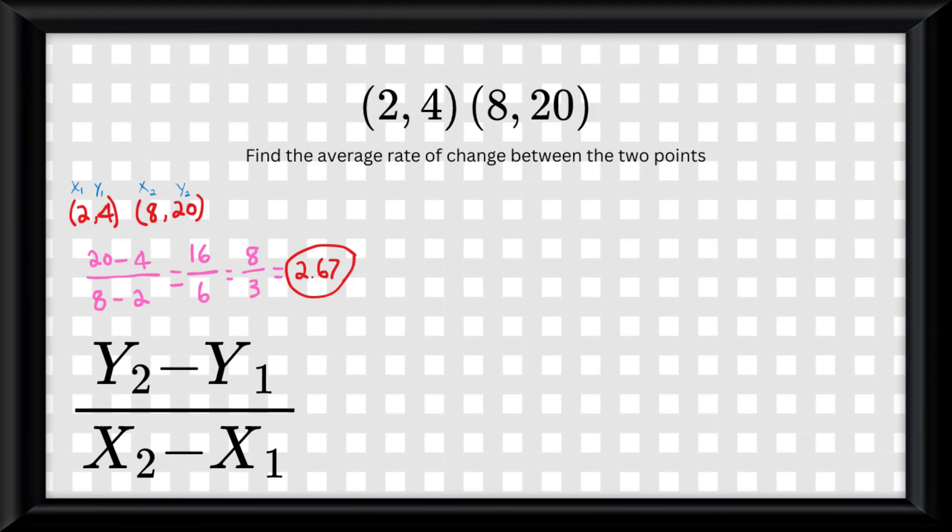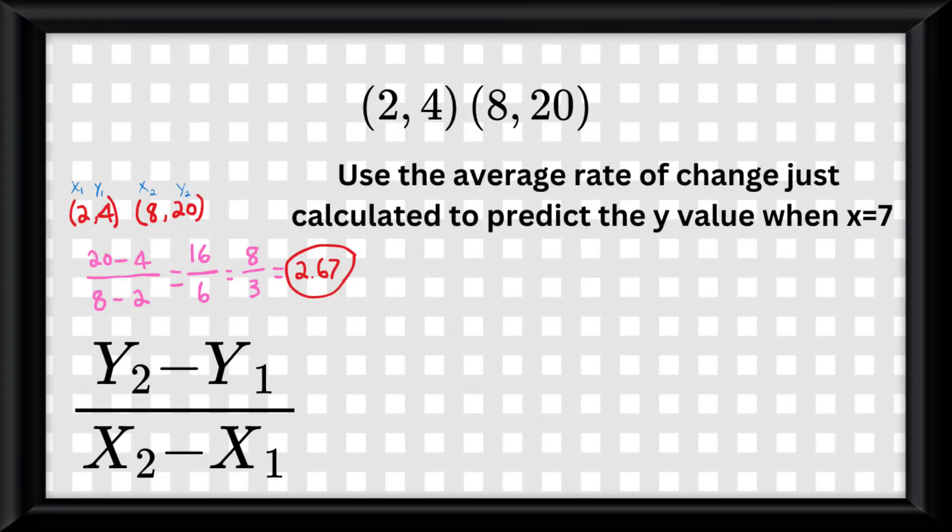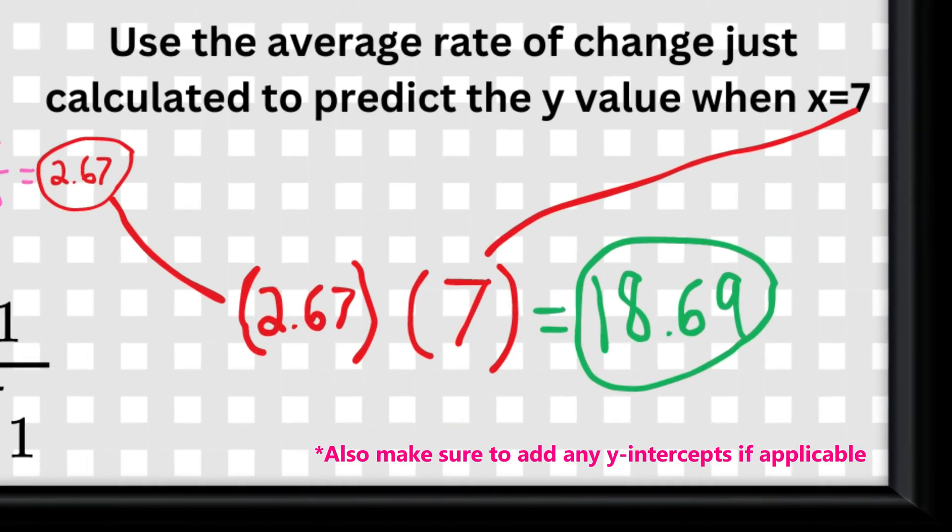Furthermore, if you are asked to use that average rate of change just calculated to predict points on the graph, simply multiply the value they give you in the word problem by the average rate of change and you got it. And it's that easy.